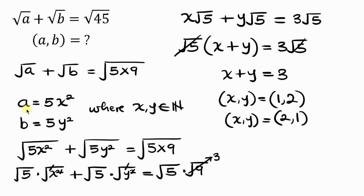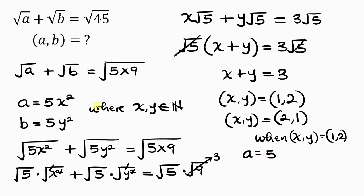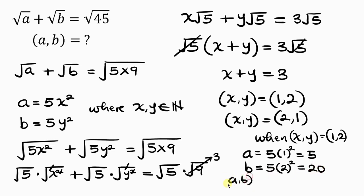Now our aim is to find a and b. Starting with x = 1 and y = 2: a = 5 times x² = 5 times 1² = 5. And b = 5 times y² = 5 times 2² = 5 times 4 = 20. So the values of a and b are a = 5 and b = 20.